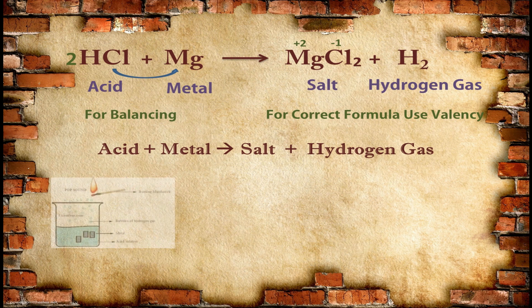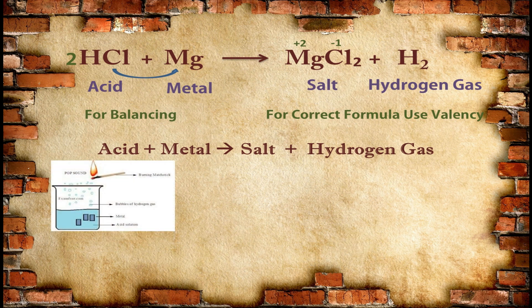Hydrogen gas will be released. With the release of this hydrogen gas, you can recognize that a reaction is taking place, or if an acid is unknown to you, you can recognize the presence of acid in a substance. Hydrogen can be tested by this method: if you bring a burning matchstick near hydrogen gas, it will burn with a pop sound. The characteristic of hydrogen gas is that it burns with a pop sound, so with this sound you can recognize that hydrogen gas is being released.